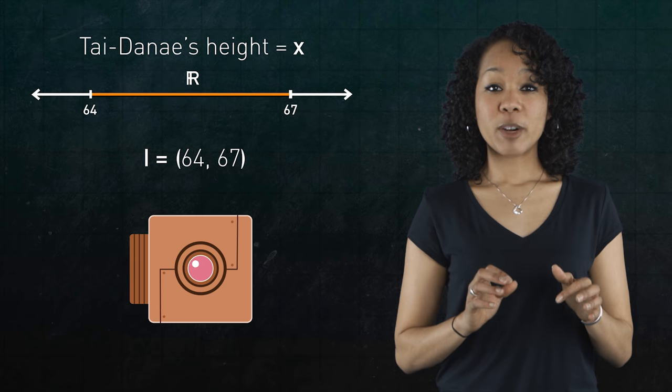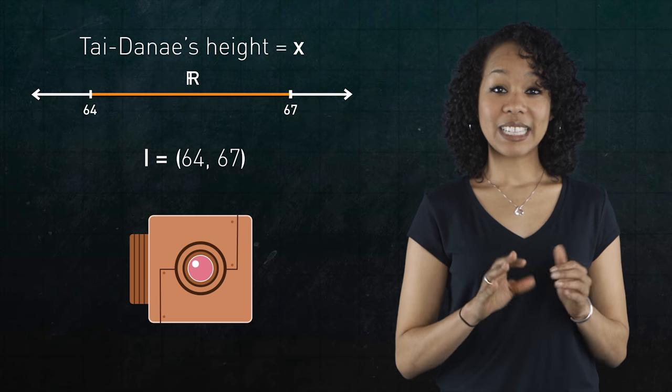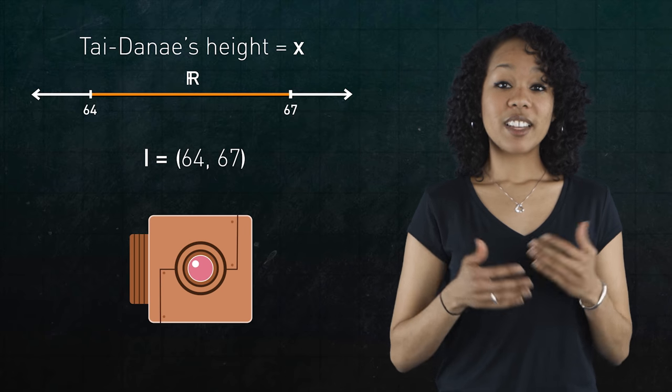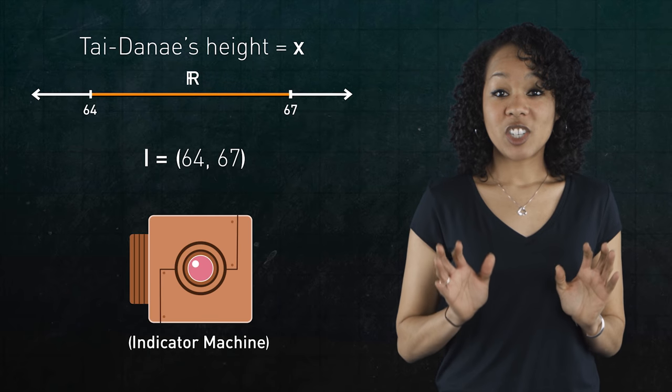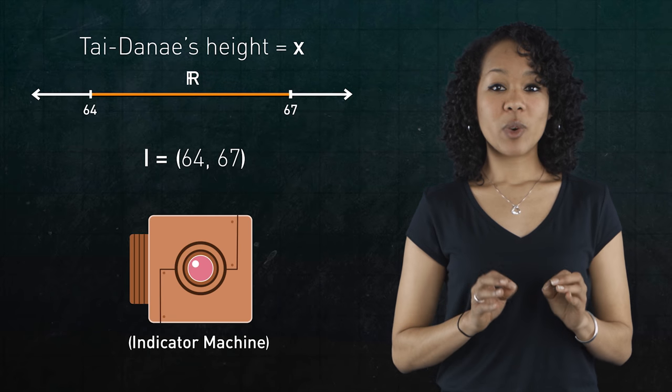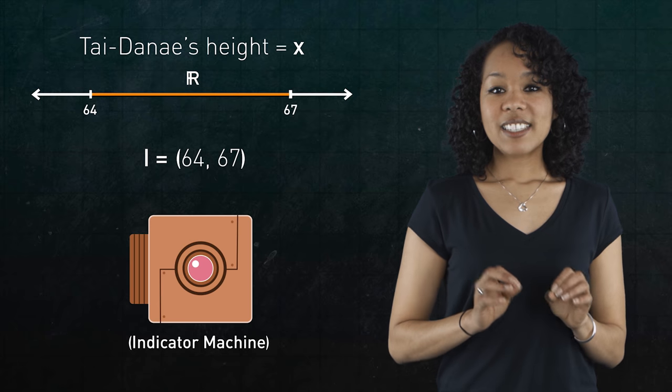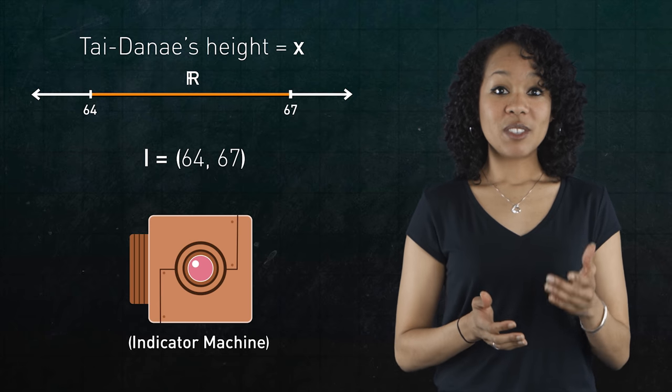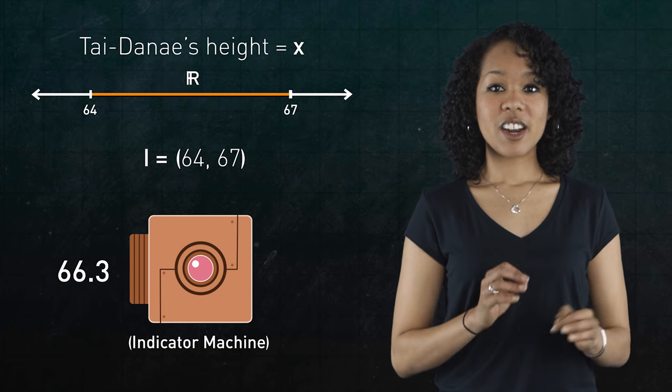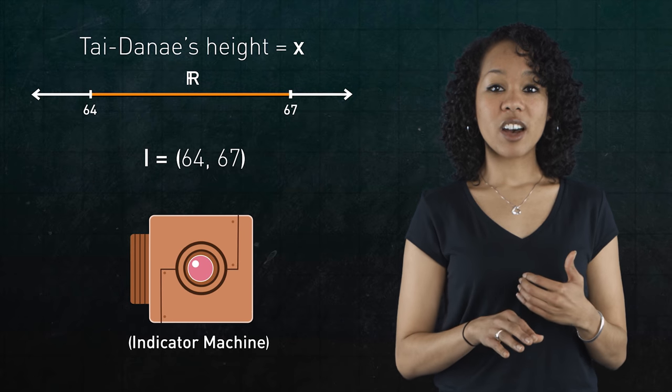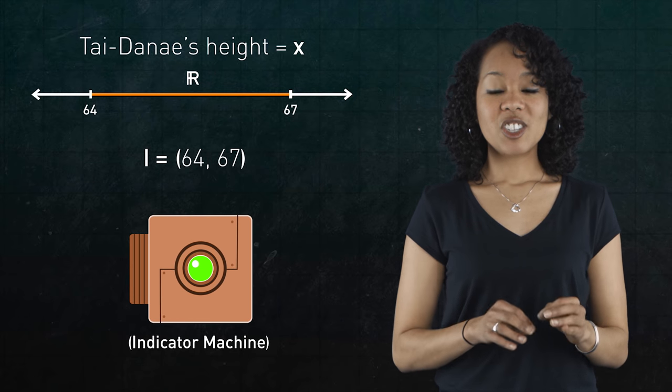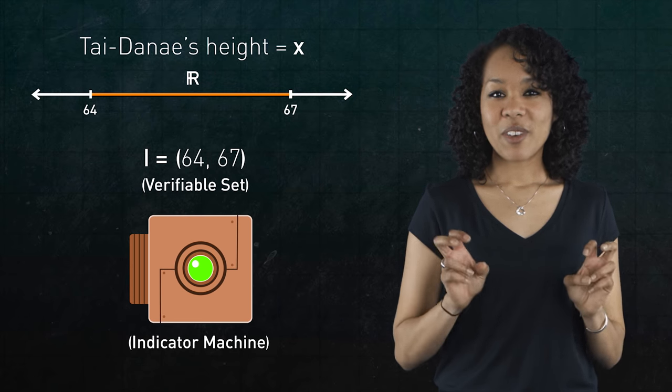Because the machine terminates when you input any number that lies in the interval i, let's call the machine an indicator machine. It indicates or verifies when a number is in i. And since every number in i is verifiable by the machine, in other words, every number in i causes the machine to terminate, let's just call the interval i a verifiable set.